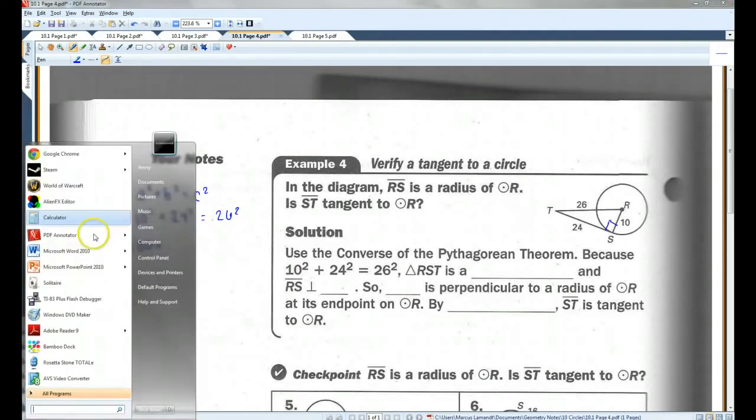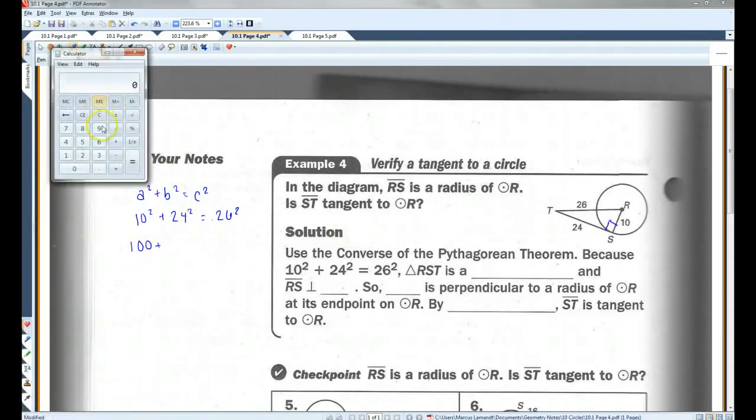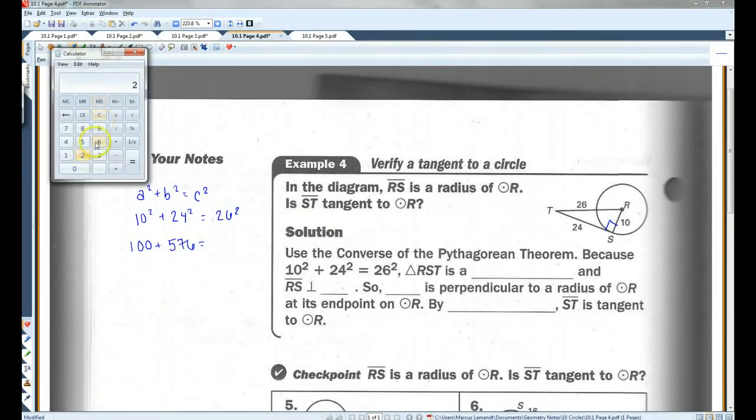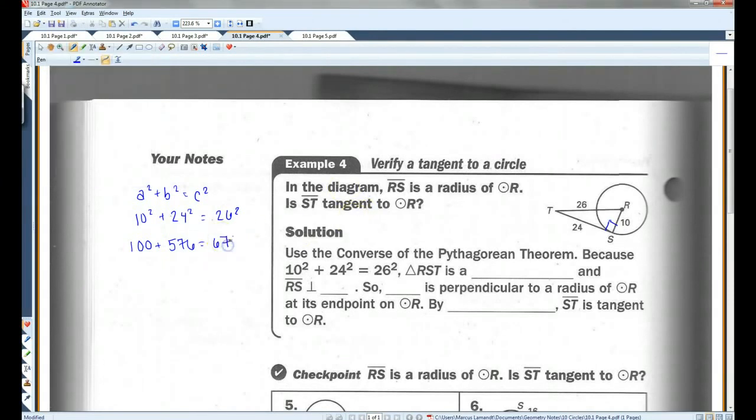24, let's pull out a calculator here. 24 times 24, 576. And 26 squared, 26 times 26, there we go, 676. I think we're good. 676 does, in fact, equal 676.